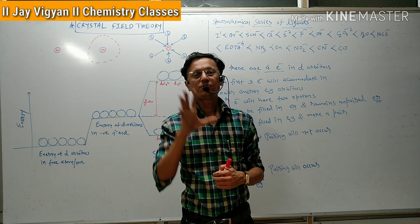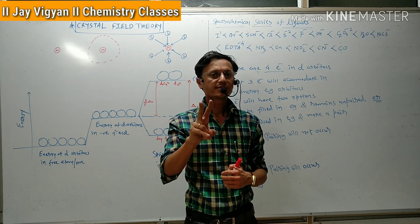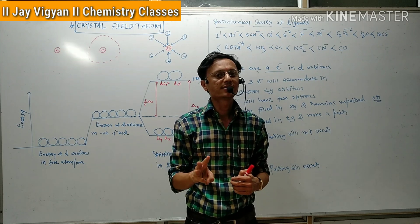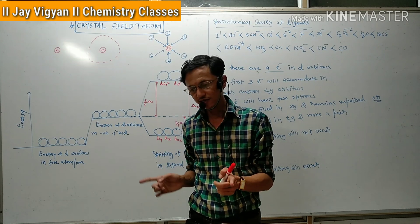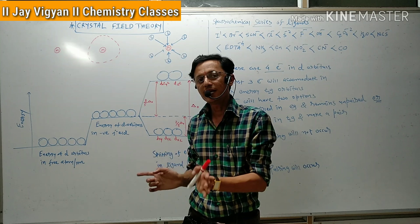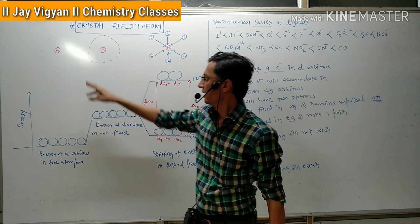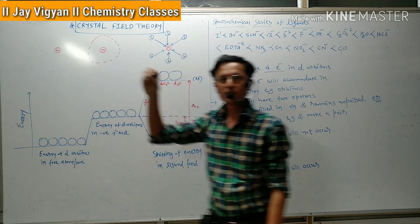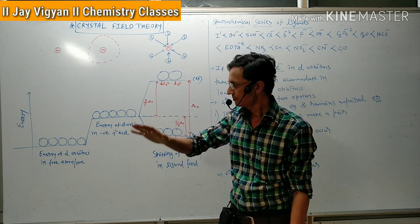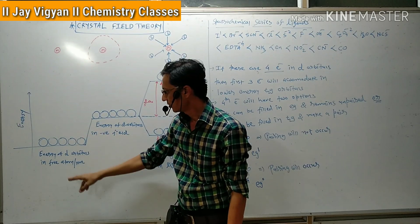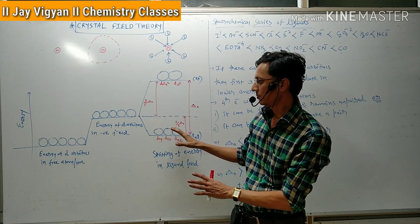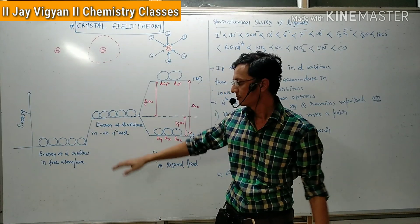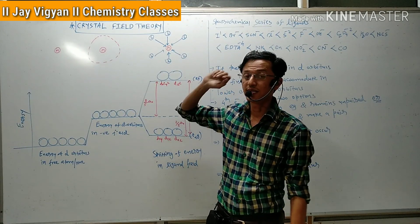Out of these 5 orbitals, 2 orbitals are situated on the axis while 3 orbitals lie between the axis or between the plane of the axis. When an atom or ion is alone, the energy of all 5 d-orbitals is the same — they are known as degenerate orbitals. This is a diagrammatic representation of the 5 d-orbitals which are having the same energy without any ligand present.